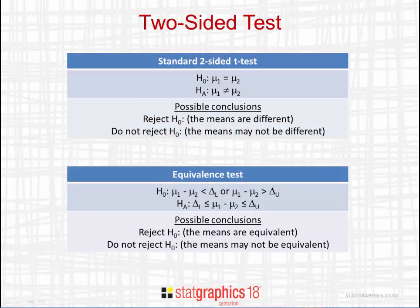To understand why we need a special procedure for equivalence testing, let's look at a typical two-sided test to compare two means. The standard two-sided t-test sets up the null hypothesis as mu1 equals mu2 and the alternative as mu1 not equal to mu2. The result is either rejecting H0 — demonstrating the two means are different — or not rejecting H0, meaning we've shown the means may not be different, though not that they are the same.